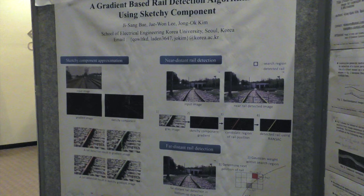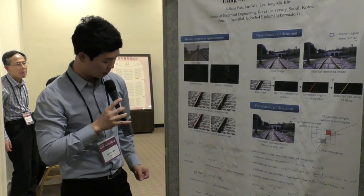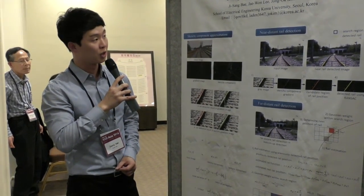N equal zero means this is a gray image. As you can see in the figures, the approximated sketch component shows a more blurred image as the number of iterations is larger. We experimentally set N to 100 in our experiment.